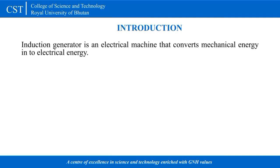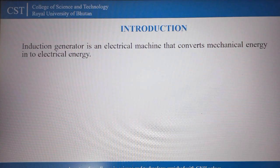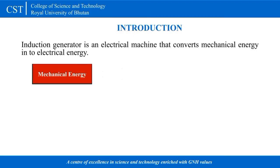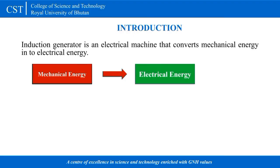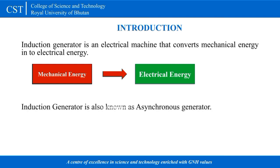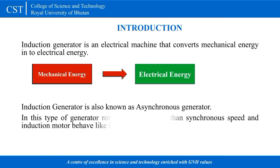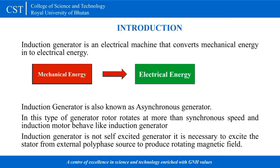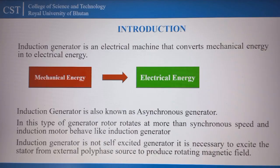An induction generator is an electrical machine that converts mechanical energy into electrical energy. It is also known as a synchronized generator. In this type of generator, the rotor rotates at more than synchronous speed, causing the induction motor to behave like an induction generator. It is not a self-excited generator — it is necessary to excite the stator from an external polyphase source.